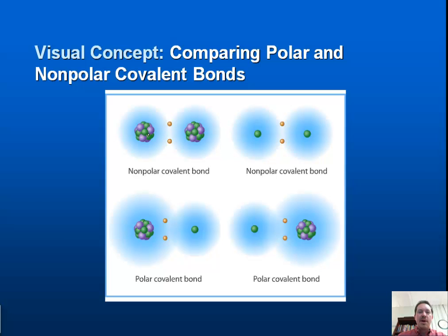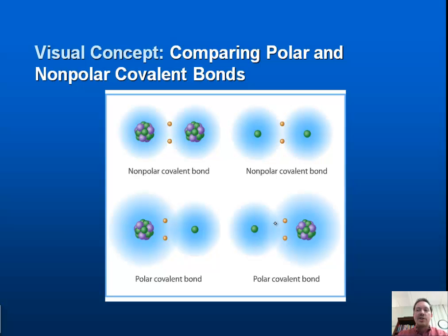With two identical atoms bonded together — say two chlorine atoms — the electrons are distributed fairly evenly. Same with a hydrogen molecule. However, if chlorine is bonded to a hydrogen atom, those shared electrons are attracted more toward the larger atom. Chlorine, being bigger, wants those electrons more than hydrogen does — think of chlorine as the bully. The electrons are attracted to the larger atom because there's more positive charge within that atom to pull those electrons toward it.